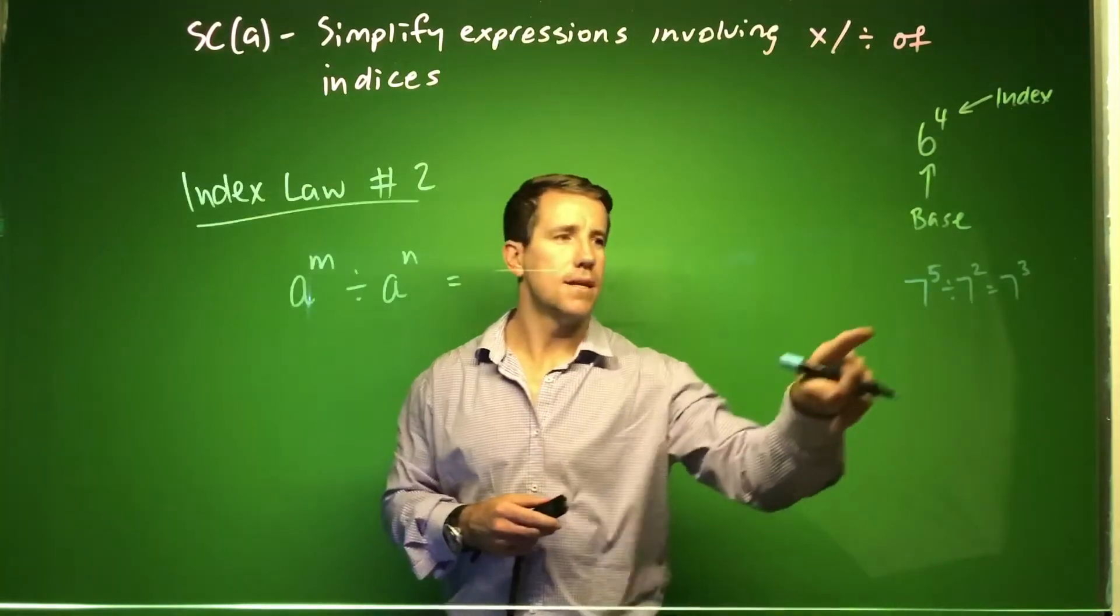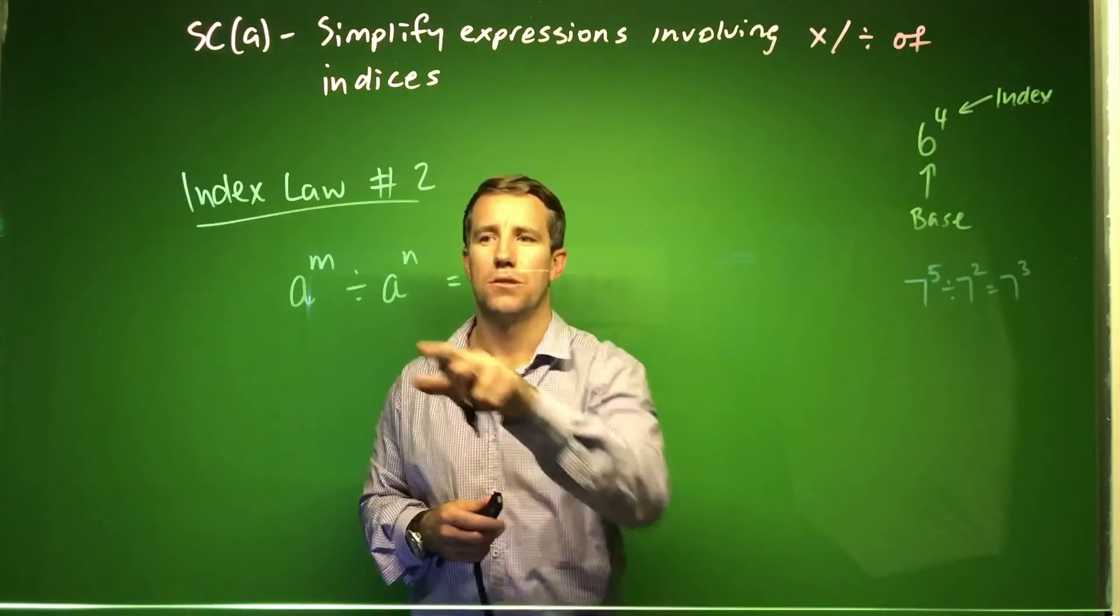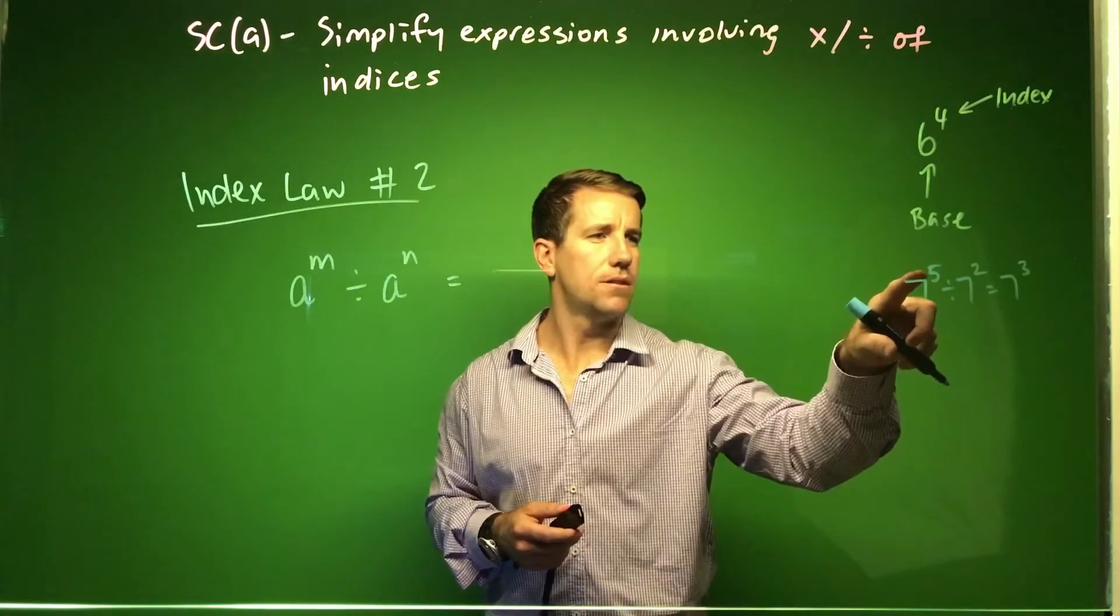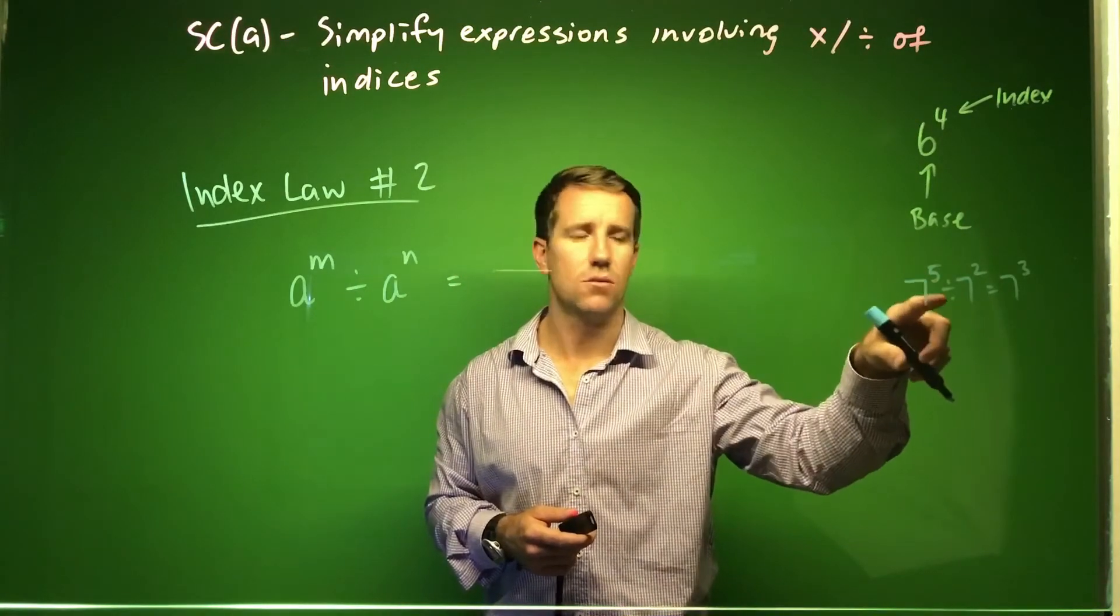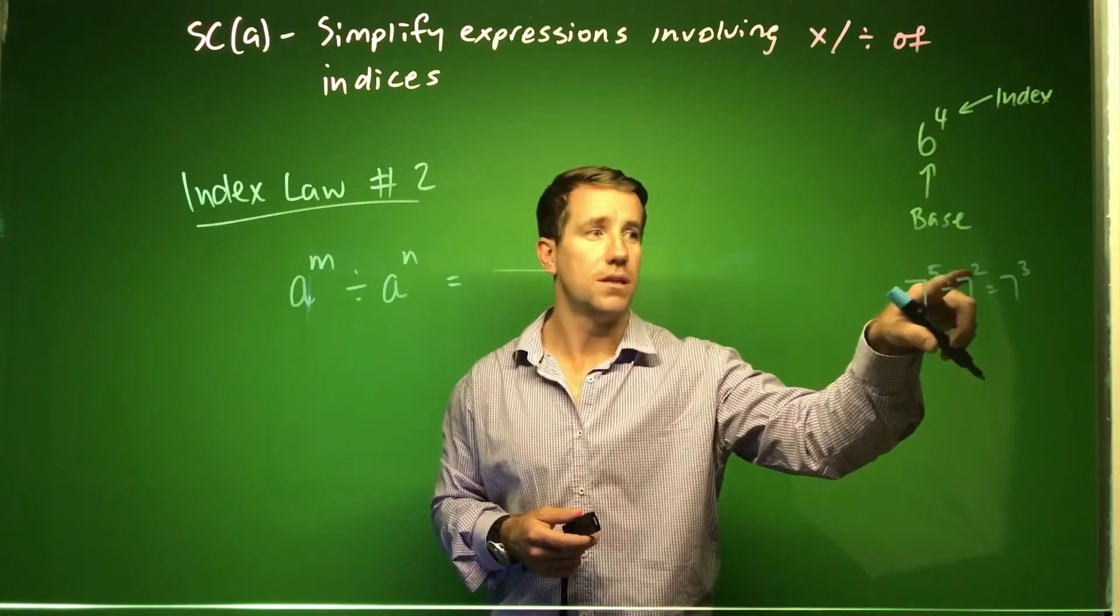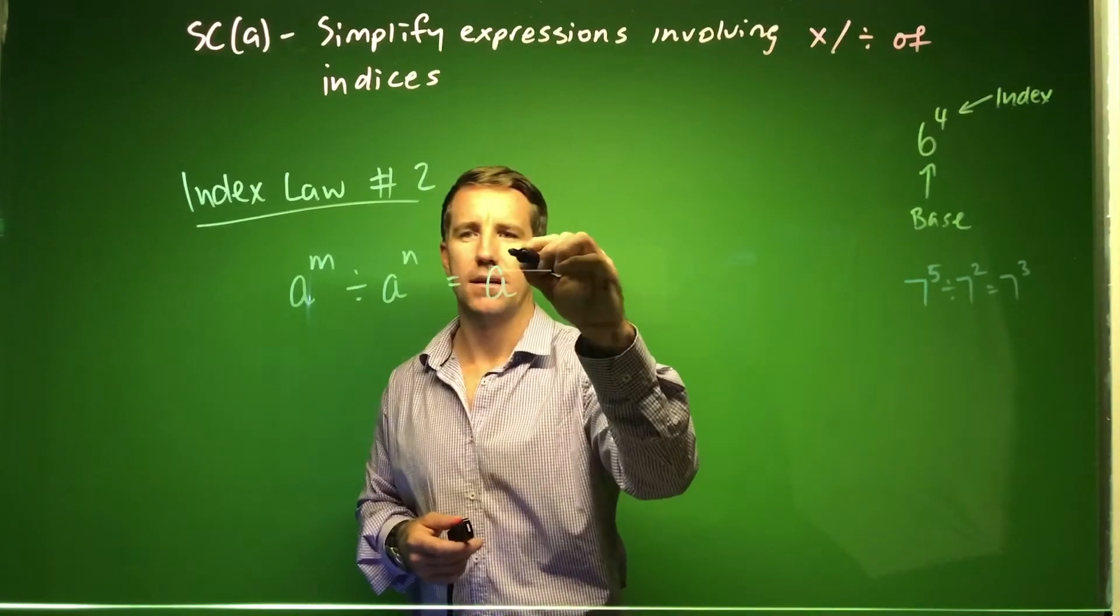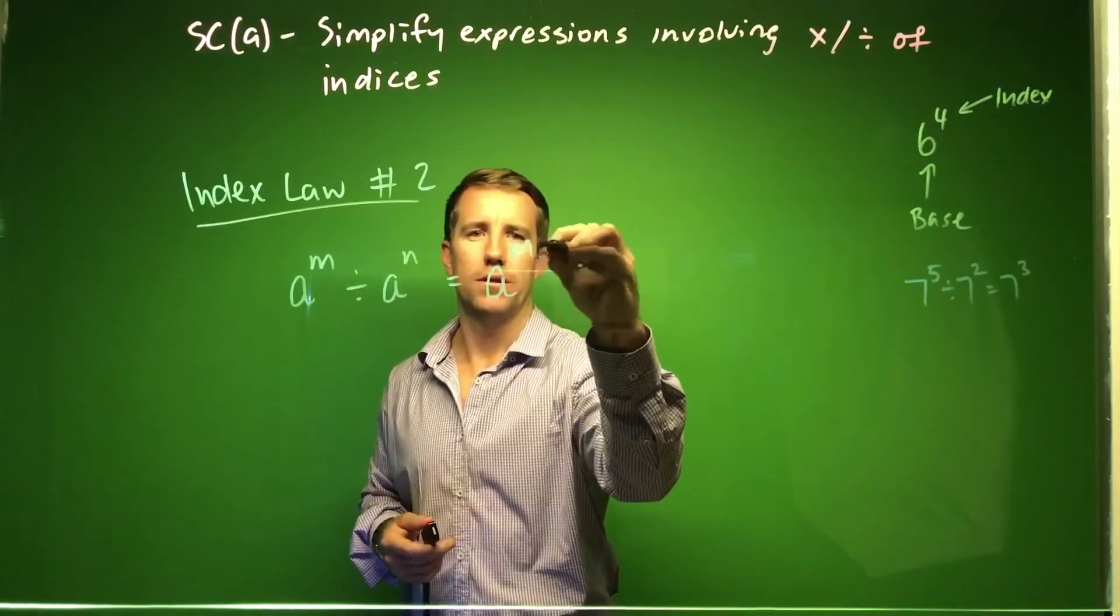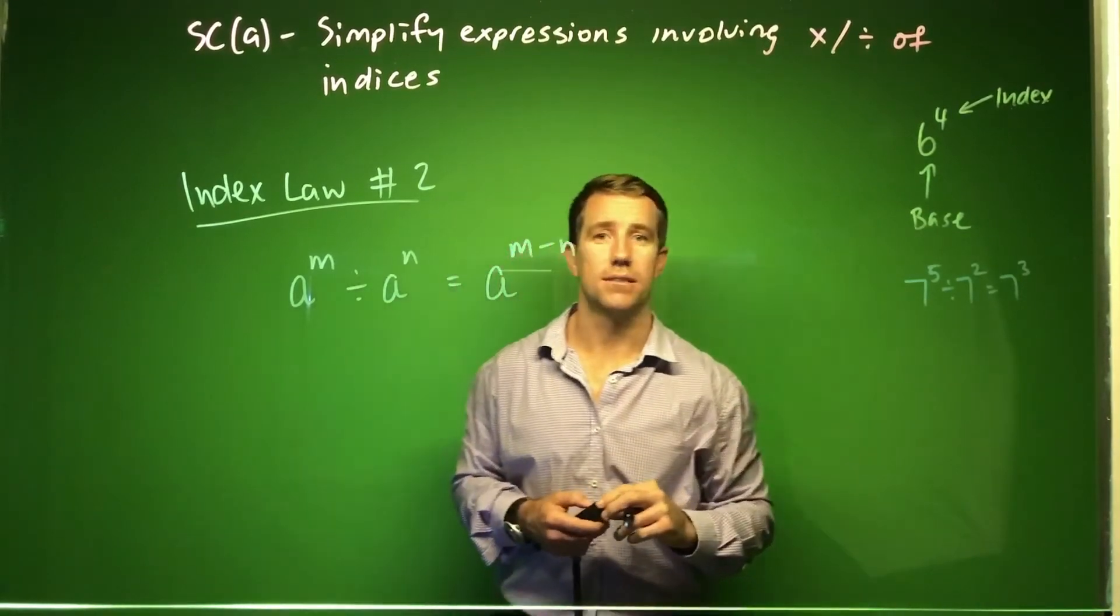From that last example, we're now going to look at index law number 2, which looks at our division. Back to that previous example, we said 7 to the power 5 divided by 7 squared left us with 7 cubed. If we can see a relationship between these, we should be able to figure out that a to the n divided by a to the m, same base, all we need to do is subtract those indexes.